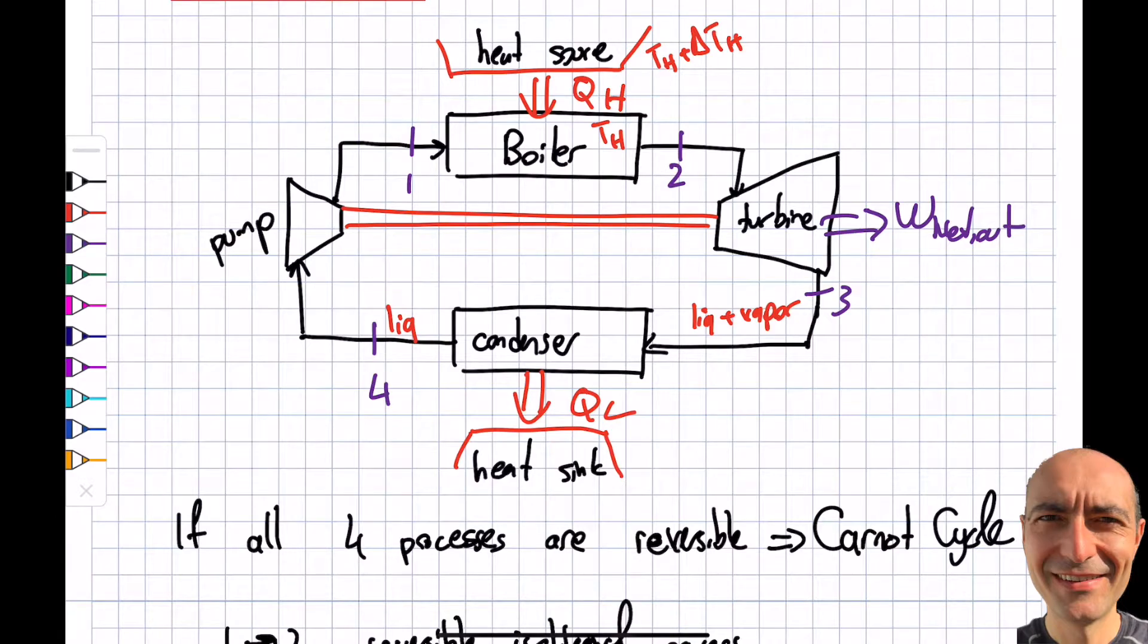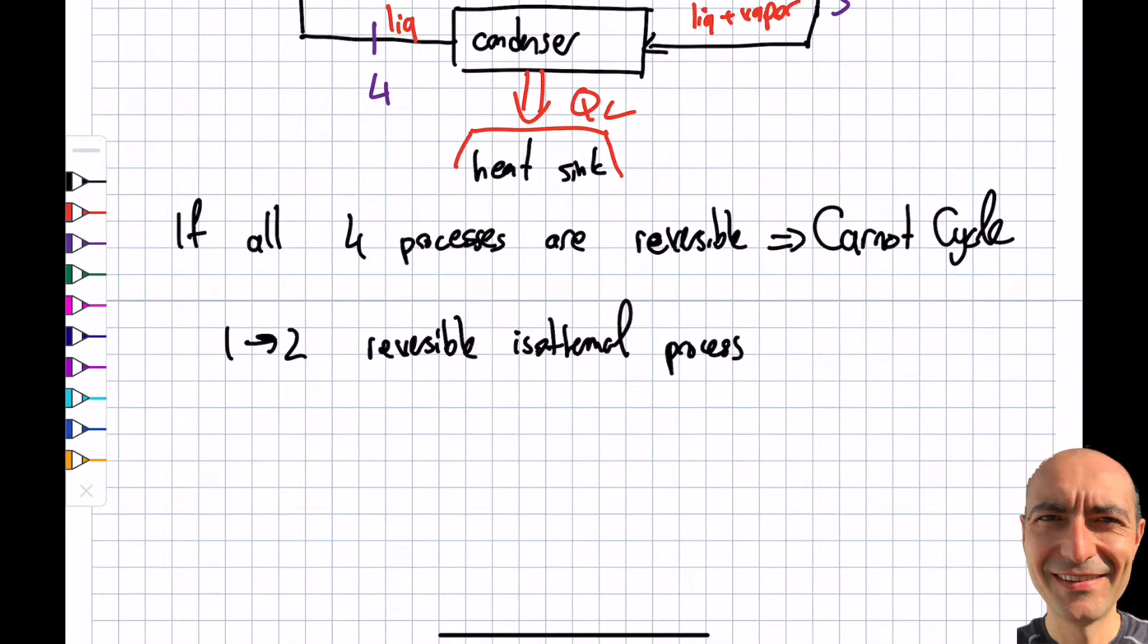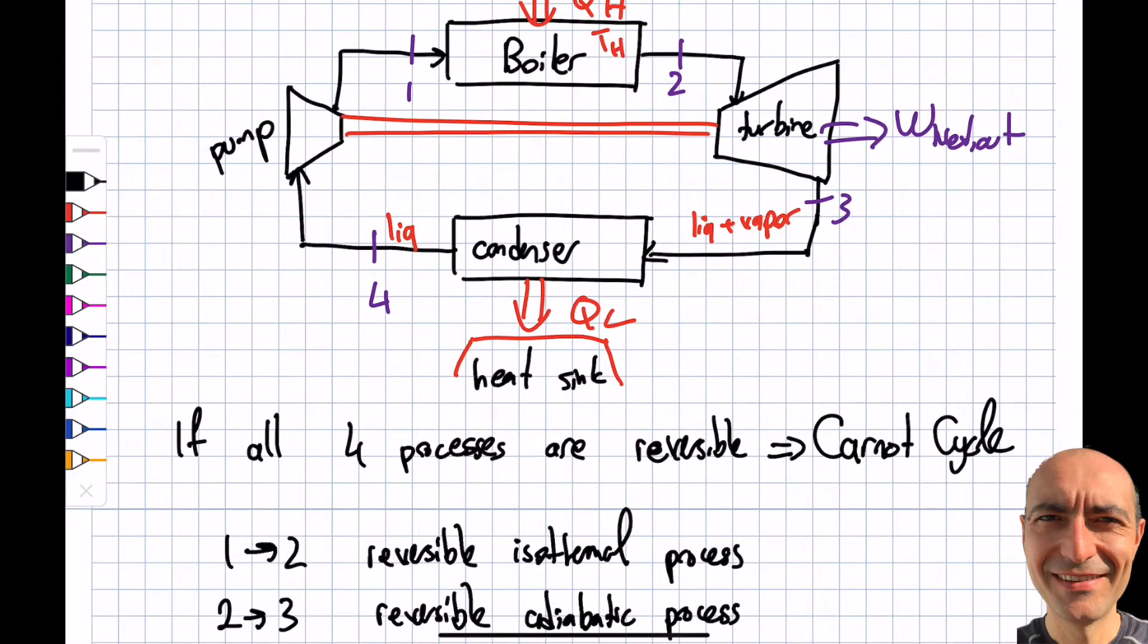That's process number one. The adiabatic turbine, this is the turbine from 2 to 3. It needs to be reversible and adiabatic. In this process, from the previous module 5 we talked about the turbine. It's adiabatic, which means I don't have any heat loss from this, which may be an okay assumption.